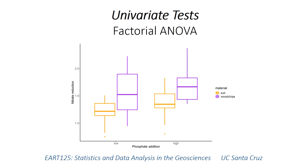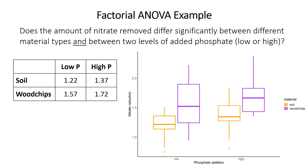This video introduces factorial analysis of variance, or ANOVA, which is a technique you might use to evaluate whether some continuous outcome differs significantly between groups when those groups are based on two or more variables. For example, does the amount of nitrate removed differ significantly between groups based on both material type and two different levels of added phosphates? Each combination has its own group mean, and we want to know if those group means differ significantly from each other.